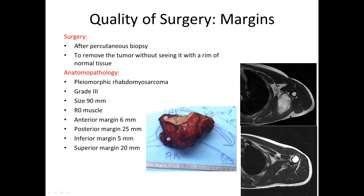The art of surgery in sarcomas is that you remove the tumor without seeing it — it remains covered by a rim of normal tissue. Here is another example: a pleomorphic rhabdomyosarcoma grade 3, nine centimeters, R0 resection, smallest inferior margin of 5 mm — a very good margin because it is muscle, which provides good tissue quality.